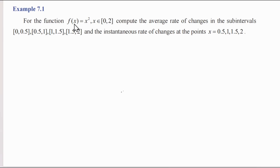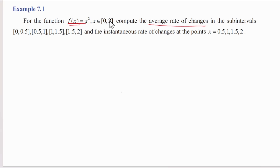If we have the function f of x is equal to x square, what do we call the average rate of change? The average rate of change is computed in the intervals [0, 0.5], [0.5, 1], [1, 1.5], and [1.5, 2].